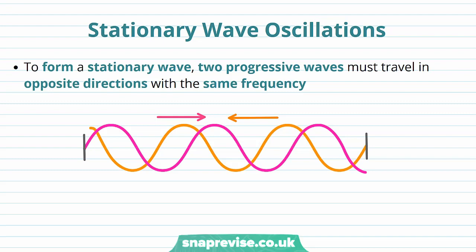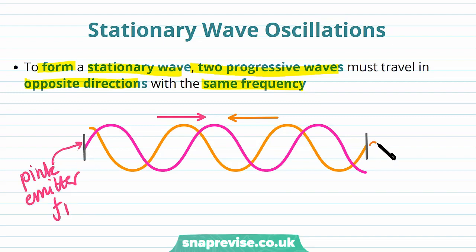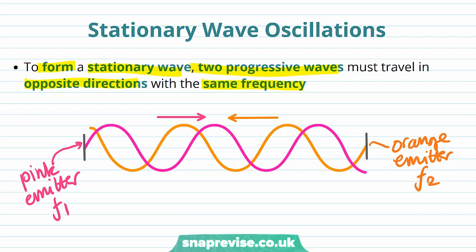To form a stationary wave, two progressive waves must travel in opposite directions with the same frequency. Here we have the emitter of the pink wave with frequency f1 and the emitter of the orange wave with frequency f2. For a stationary wave, f1 must equal f2. We call this common frequency f.